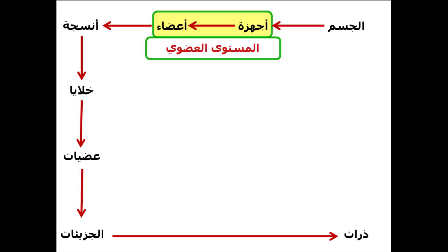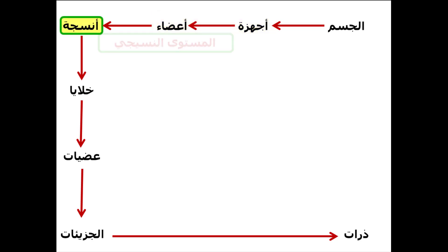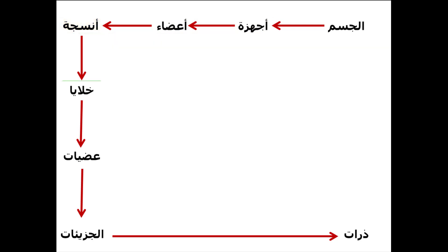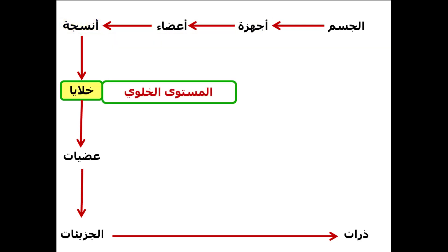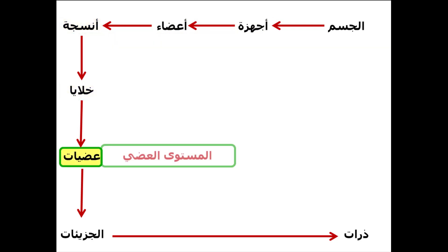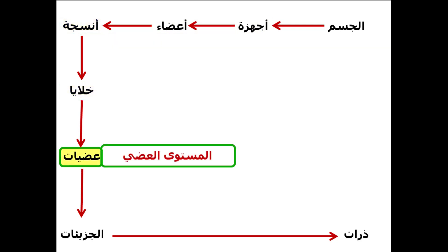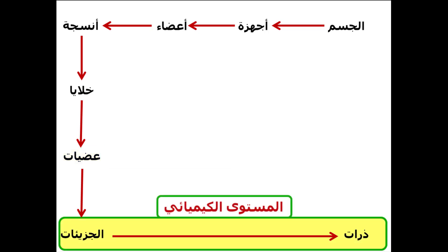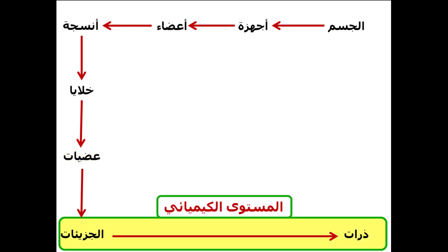الأنسجة: مستوى نسيجي. الخلايا: مستوى خلوي. العضيات: مستوى عضوي. الجزيئات والذرات: يطلق عليها مستوى كيميائي.